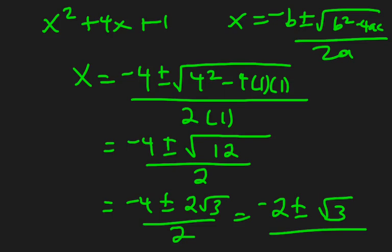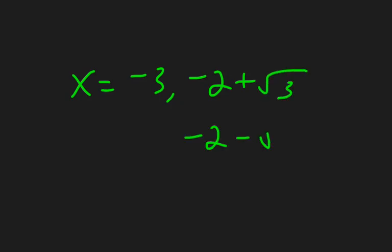So remember that a cubic usually has three solutions, sometimes 1 and double root. Or it could have just 1 and 2 imaginaries as well. So those are my three solutions. Let me write up my final answer. So my solutions are x equals 3, negative 2 plus root 3, negative 2 minus root 3.